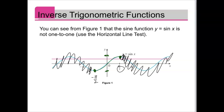With a normal trig function, you input an angle and the output is a ratio — like opposite over hypotenuse — which is just some number. That means for inverse trig, the inputs and outputs are swapped: you're inputting a value and the output is going to be some angle corresponding to that value.